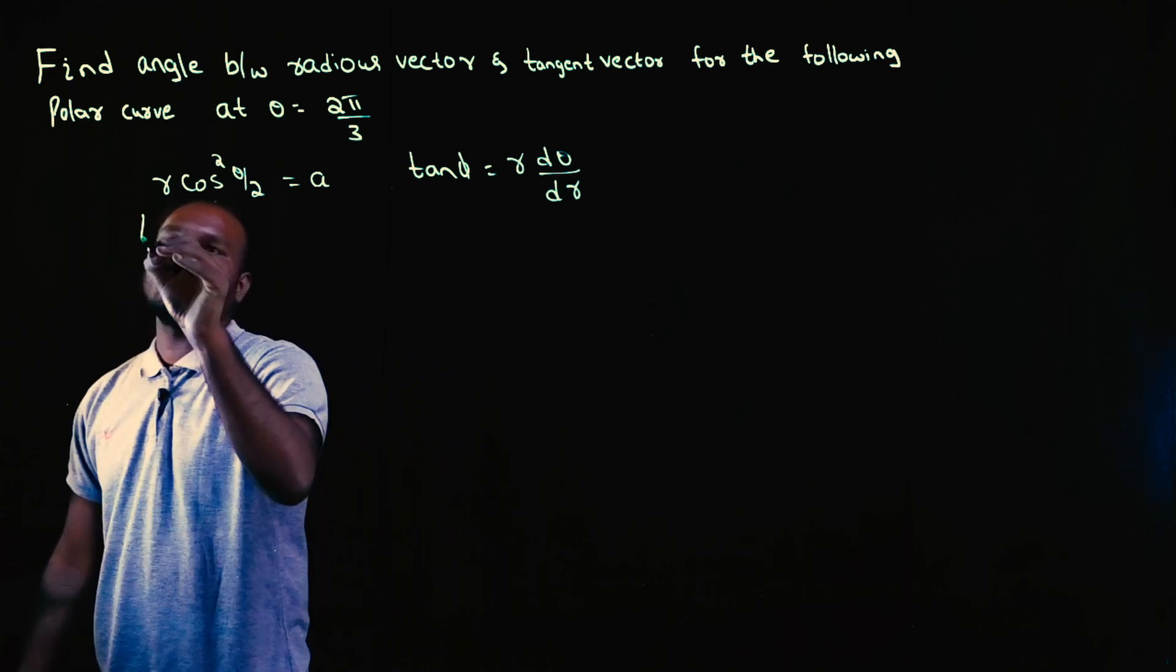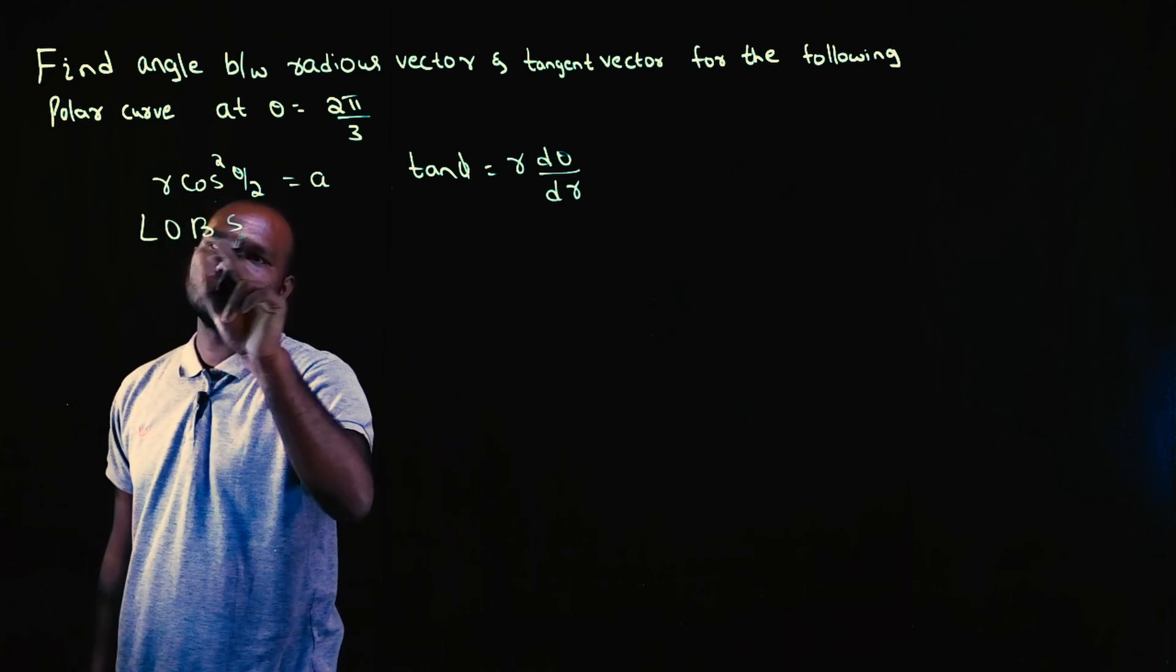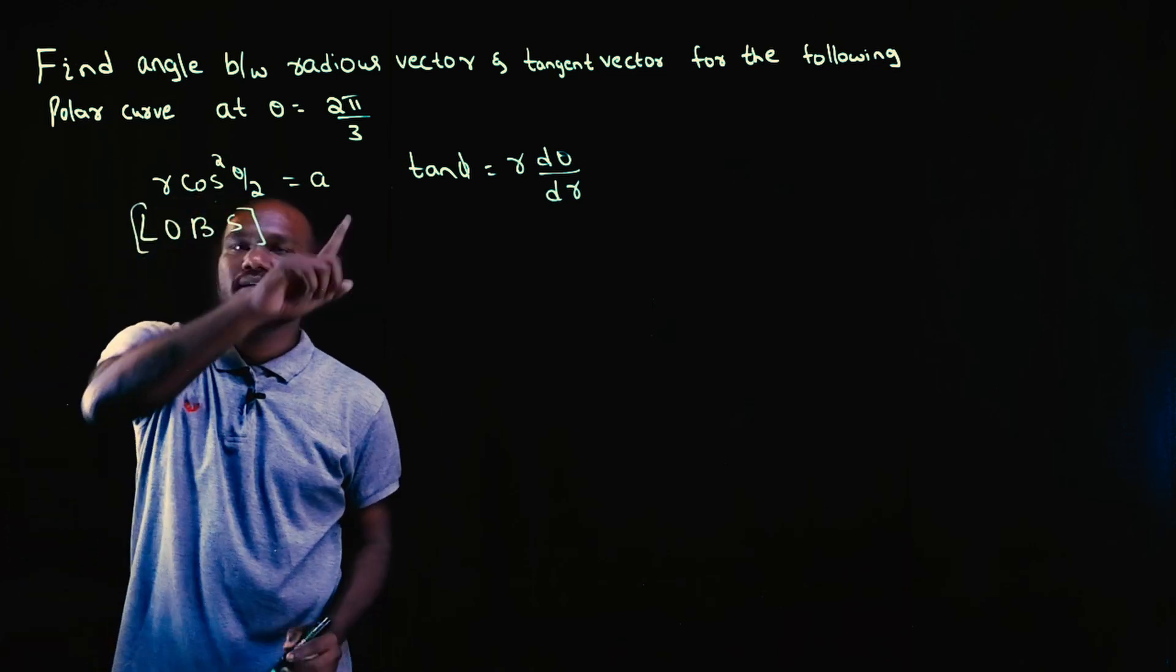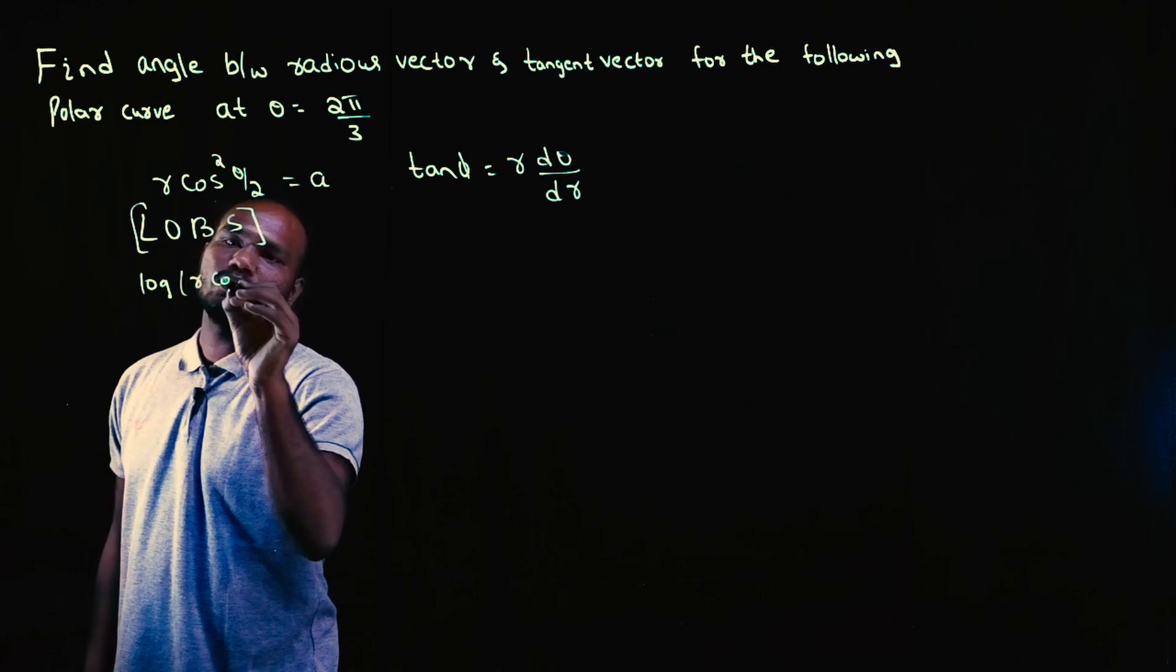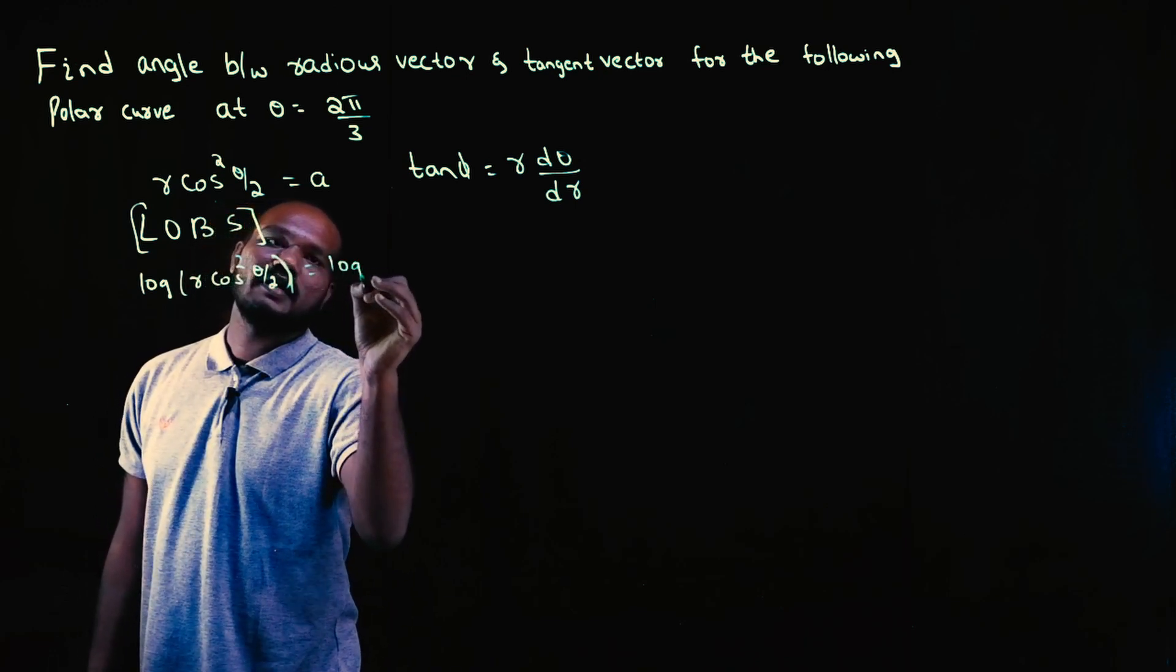So what I will do, I will take log on both sides. So let's take log on both sides. So log R into cos square theta by 2 is equal to log A.